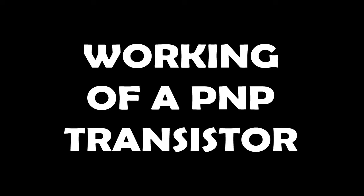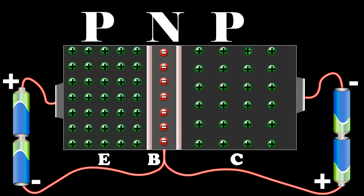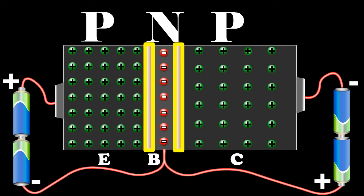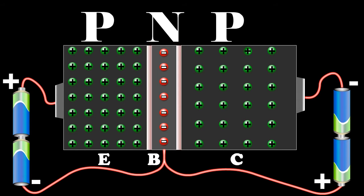Explain the working of a PNP transistor. Now let us see the construction. A PNP transistor is like two PN junction diodes which are placed back to back. At each junction there is a depletion region which gives rise to a potential barrier.